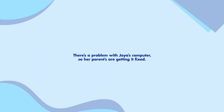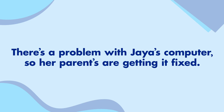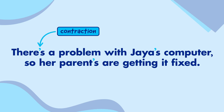Here's the next sentence. 'There's a problem with Jaya's computer, so her parent's are getting it fixed.' Okay, so I can see three apostrophes this time. The first one is in 'there's', which is a contraction of 'there is' — correct. The second apostrophe is in 'Jaya's', showing that the computer belongs to Jaya — also correct. The last apostrophe is in the plural word 'parents'. It's not a contraction, and nothing belonging to the parents is shown here, so that apostrophe is wrong.